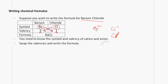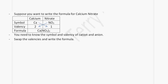Suppose we want to write the formula for calcium nitrate. First, write the symbols: calcium is Ca, nitrate is NO3. The valency of calcium is 2 and nitrate is 1, so we swap the numbers and write it as Ca(NO3)2. You have to be very careful with your brackets when writing formulae. Because calcium has a plus 2 charge, we need 2 nitrate ions, which is how we get Ca(NO3)2.